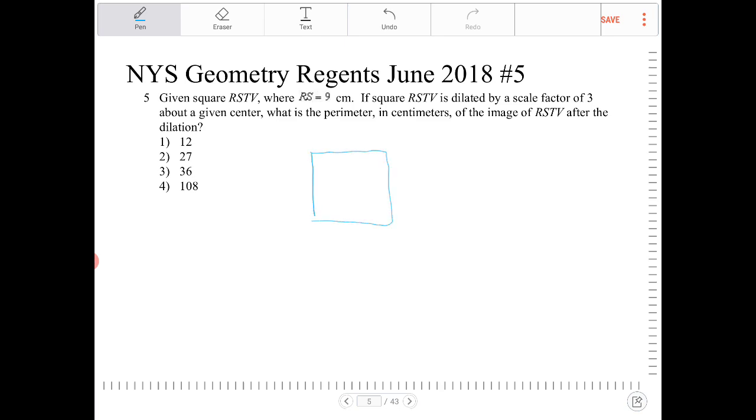So whenever you're drawing any geometric figure from a description, make sure that you are labeling either in a clockwise or counterclockwise orientation. And it doesn't matter which one you pick, the outcome is going to be the same. So RS is equal to 9.